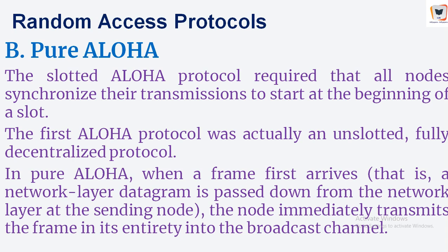If a transmitted frame experiences a collision with one or more other transmissions, the node will then, immediately after completely transmitting its collided frame, retransmit the frame with probability P. This is why it is also classified as a random access protocol. Otherwise, the node waits for a frame transmission time, then transmits with probability P, or remains idle for another frame time with probability 1 minus P.